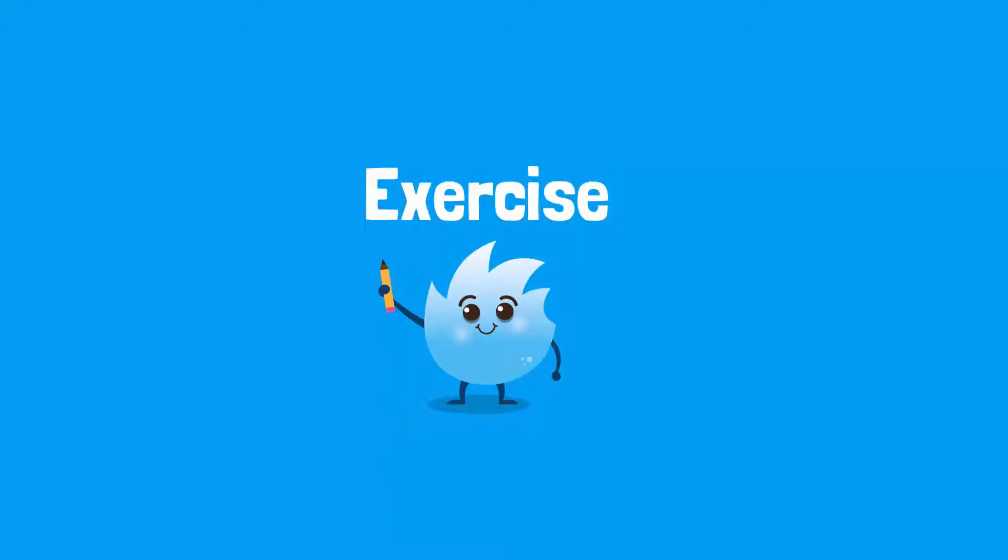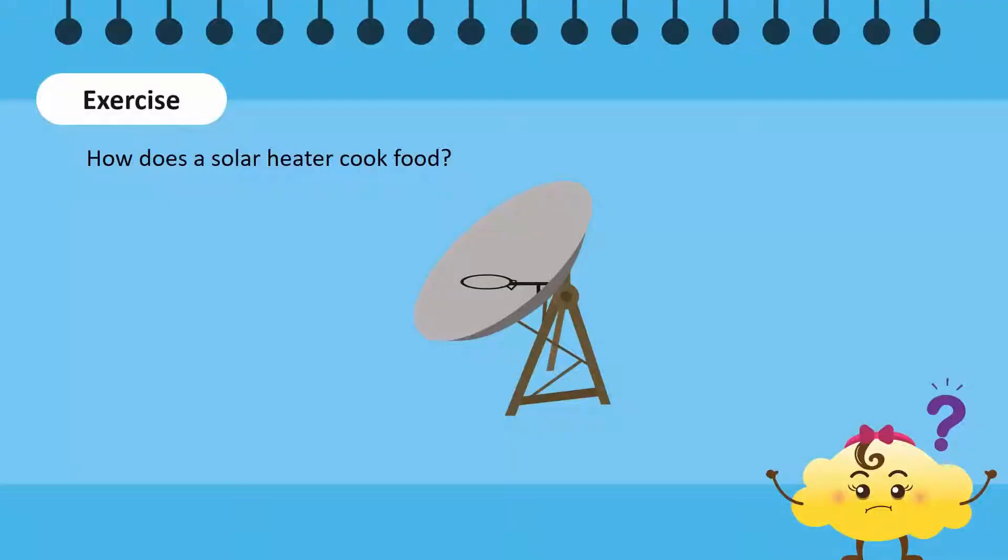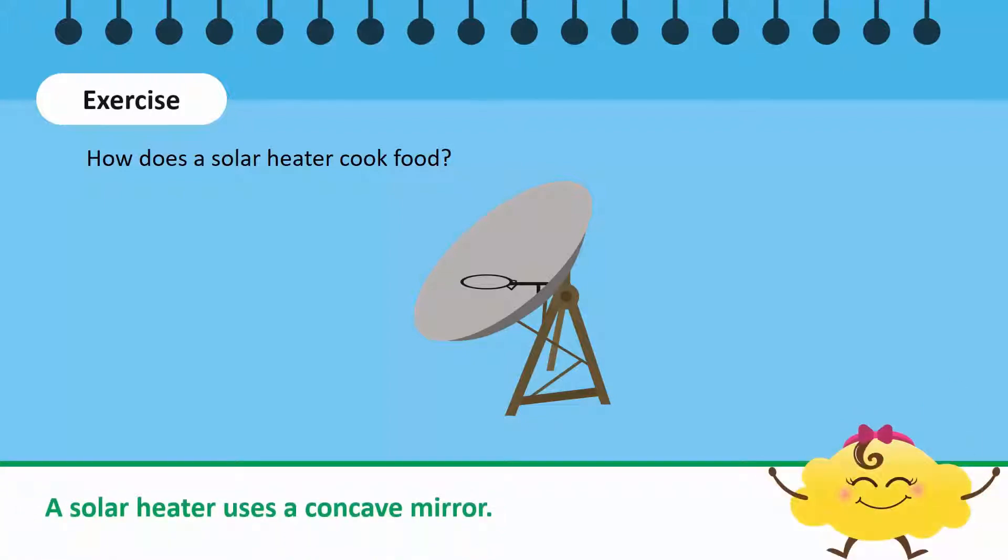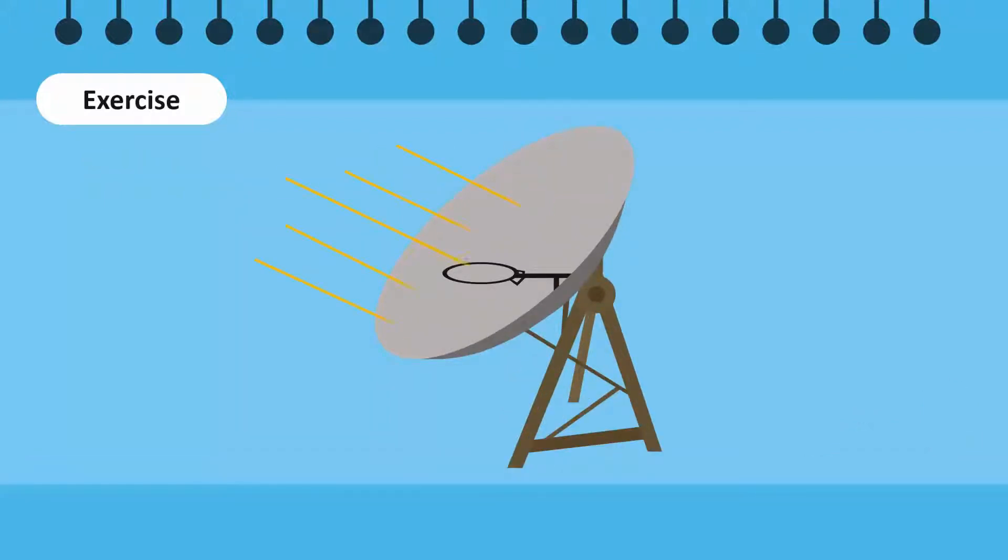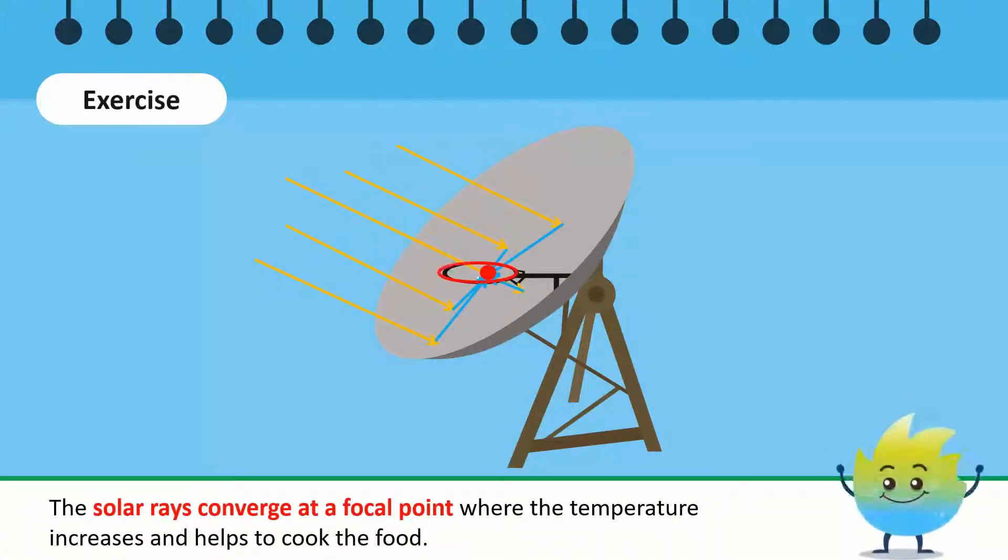Let's do an exercise. Here is a solar heater. How does a solar heater cook food? A solar heater uses a concave mirror. The sun's rays strike the concave mirror and converge at the focal point, thus making the focal point a very hot location. If we place a paper at the focal point, it will burn. We can use this focal point for cooking or heating food.